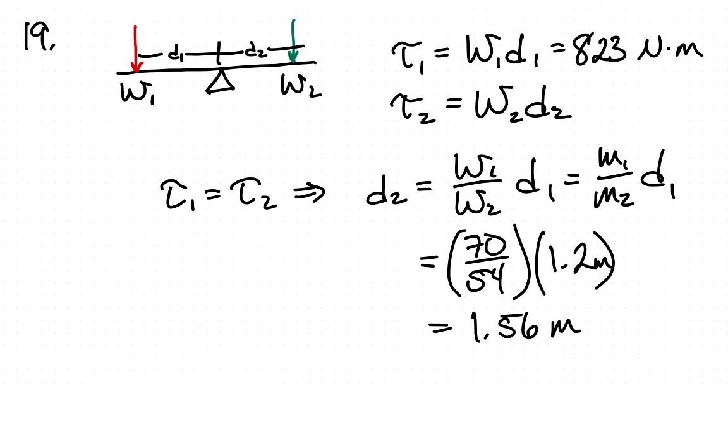And so that tells us that d2, what we're looking for, how far Dawn needs to sit from the fulcrum, is just the weight of the person on the other side divided by her weight times the distance that the other person is sitting. These things both have g in them so we can cancel g and we get their mass ratio instead of a weight ratio.